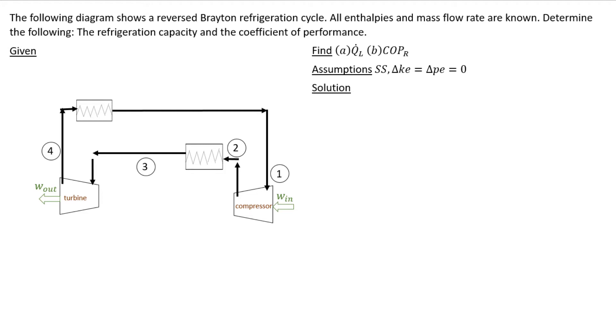So as your working fluid, as your refrigerant, which in a reverse Brayton cycle is probably air, so as your air flows from state 1 to state 2, it's being compressed. The pressure is going up and the temperature is going up.